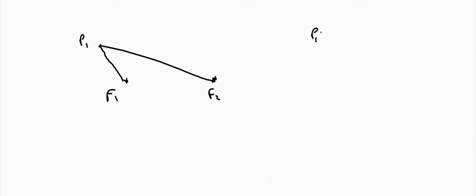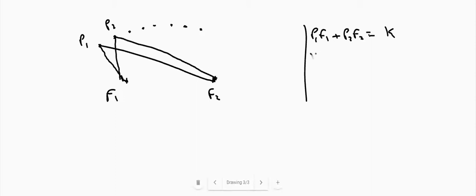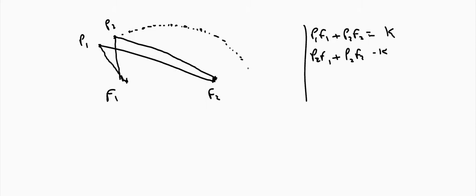That is, if there is a point P1, then P1F1 plus P1F2 is the same constant k. Some set of points which satisfies this condition — P2F1 plus P2F2 is the same constant — forms an ellipse. Similarly, P3F1 plus P3F2 equals the same constant. This set of points forms an ellipse.